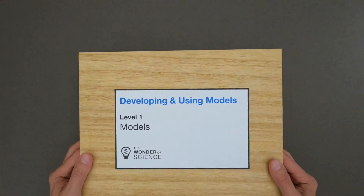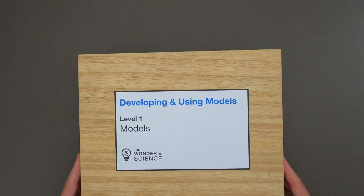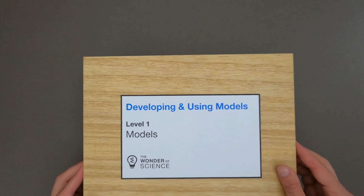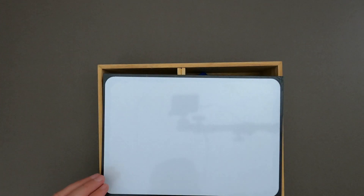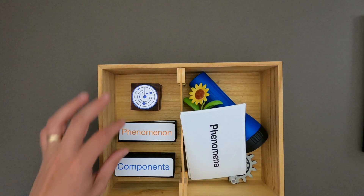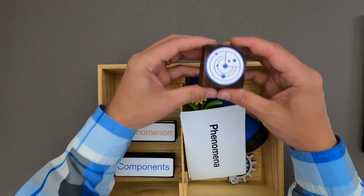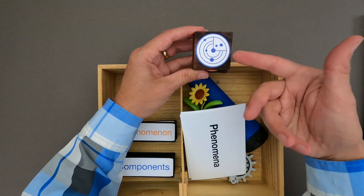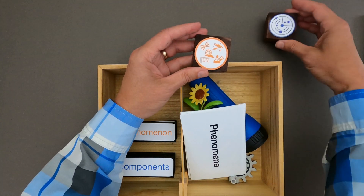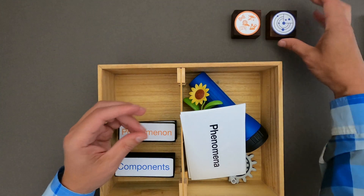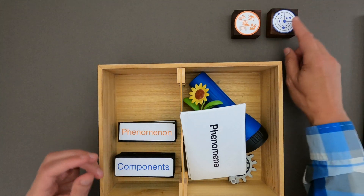Hi, it's Mr. Andersen and this is a mini lesson on developing and using models - level one. What is a model? As I open this up you can see there's a whiteboard, meaning we're going to be doing some drawing. When you're looking at modeling, the icon that represents it could be anything - it could be an atom, it could be a solar system - but it's not a phenomena.